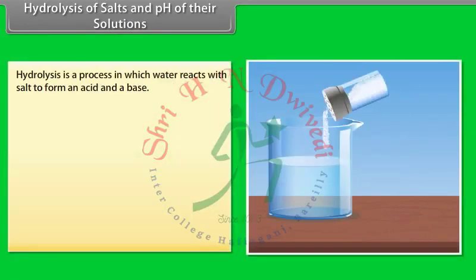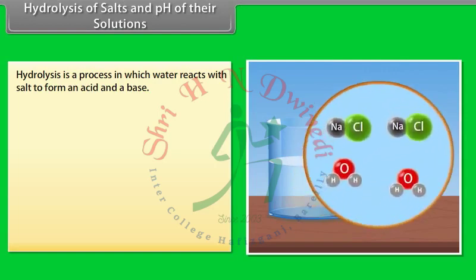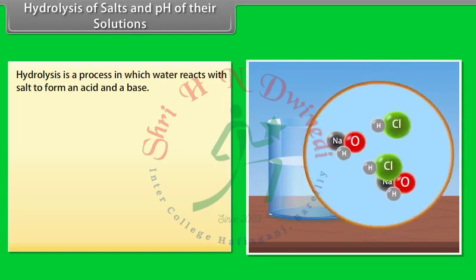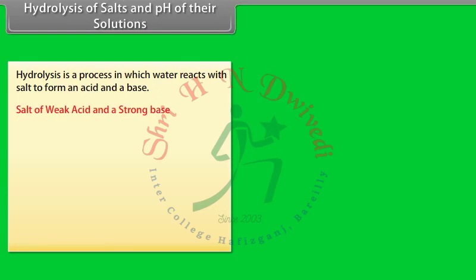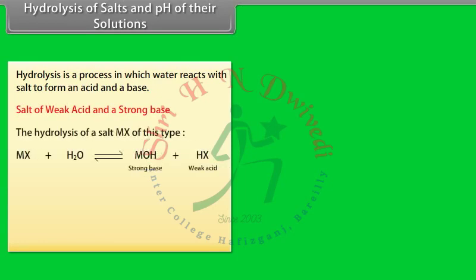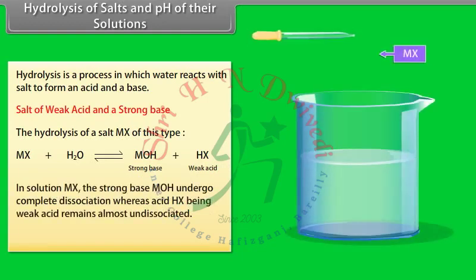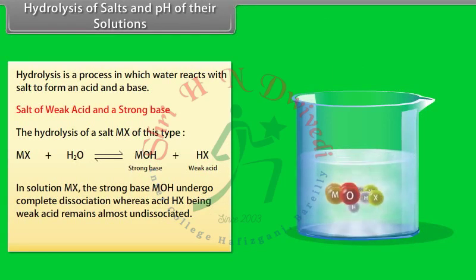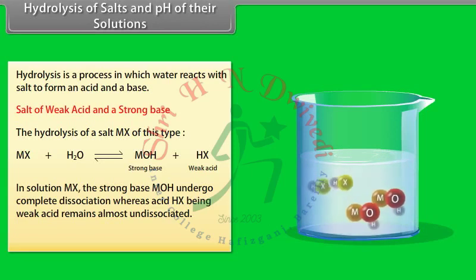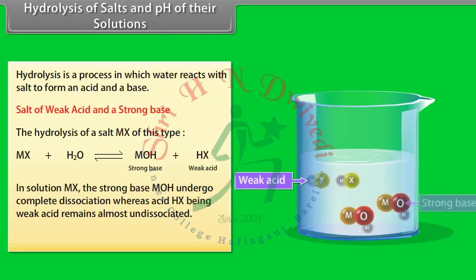Hydrolysis is a process in which water reacts with a salt to form an acid and a base. For a salt of a weak acid and a strong base, the strong base MOH undergoes complete dissociation whereas the weak acid HX remains almost undissociated. The pH of this type of solution is more than 7.